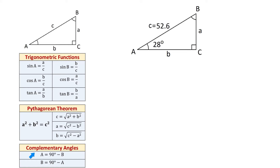Below we also have the formulas to find angle A and angle B: A equals 90 degrees minus angle B, and B equals 90 degrees minus angle A. In any triangle, the sum of all three angles equals 180 degrees, and because this triangle has a right angle of 90 degrees, the sum of angle A and angle B is also 90 degrees. Therefore, if we know angle B and need to find angle A, we just subtract angle B from 90 degrees.